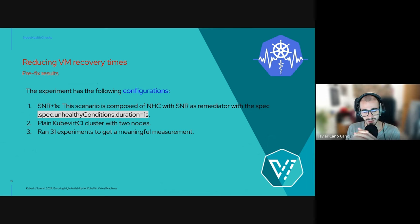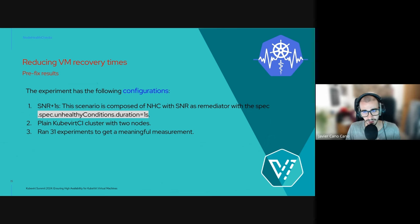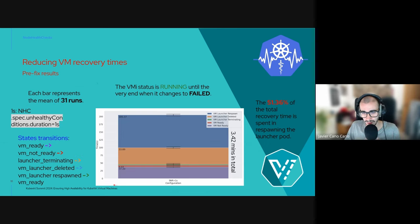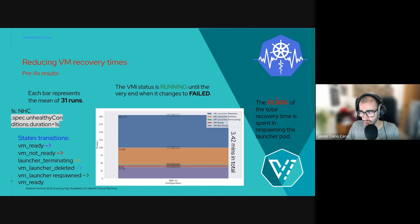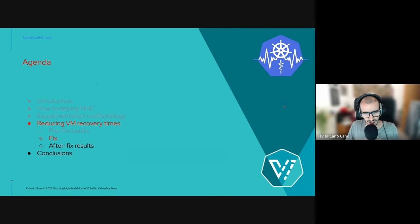We establish a baseline scenario with an unhealthy duration of one second in a plain KubeVirt CI cluster with two nodes, running 31 experiments to get meaningful measurements. In the plot, the horizontal axis shows the configuration used and the vertical axis shows the VM recovery time in seconds. We can see that most of the time is spent respawning the launcher pod — almost 51% of the total recovery time. So let's see how we can fix this.